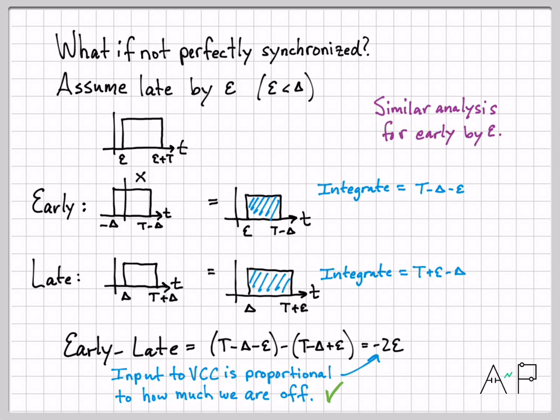That concludes the early gate late gate symbol synchronization technique. It gives us an error signal proportional to how unsynchronized we are, which controls the voltage controlled clock to adjust when those triggers fire. In the next video we move to the next level — frame synchronization — since most digital communication schemes pack data into frames and we also need to track when a frame of data starts.